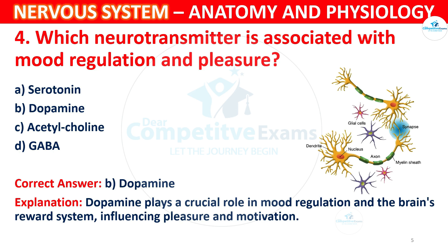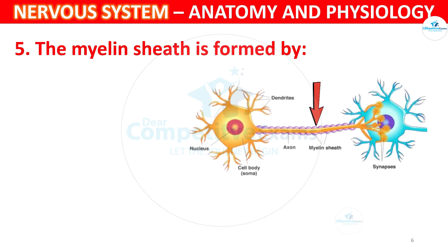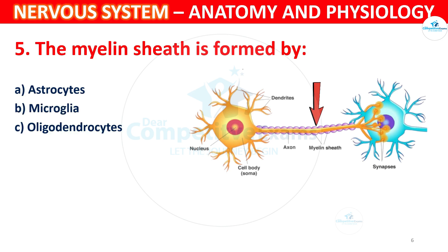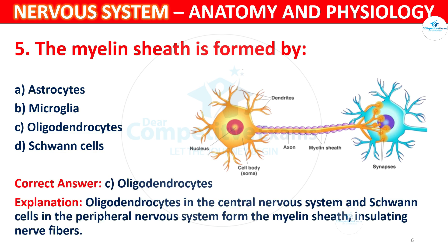Question 6: The myelin sheath is formed by which cells? Options: A) Astrocytes, B) Microglia, C) Oligodendrocytes, D) Schwann cells. The correct answer is C, Oligodendrocytes. Oligodendrocytes in the central nervous system and Schwann cells in the peripheral nervous system form the myelin sheath, insulating nerve fibers.